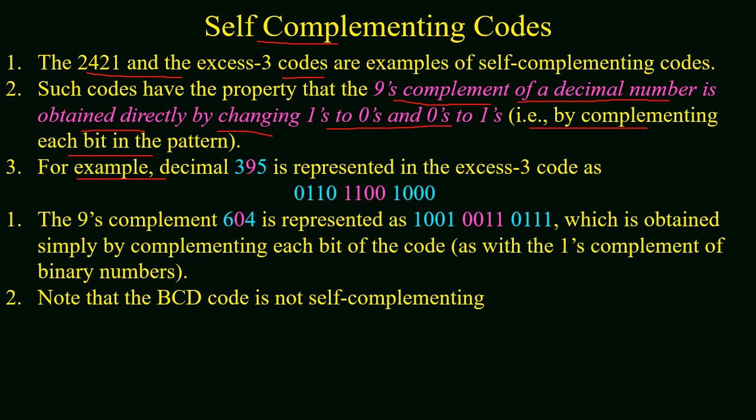For example, decimal 395 is represented in XS3 code as 0110 1100 1000. Now its 9's complement 604 is represented as 1001 0011 0111, and this is directly obtained by changing 1s into 0s and 0s into 1s. Here also note that BCD code is not a self-complementing code.